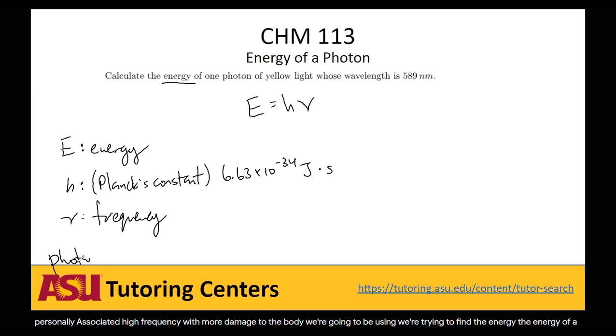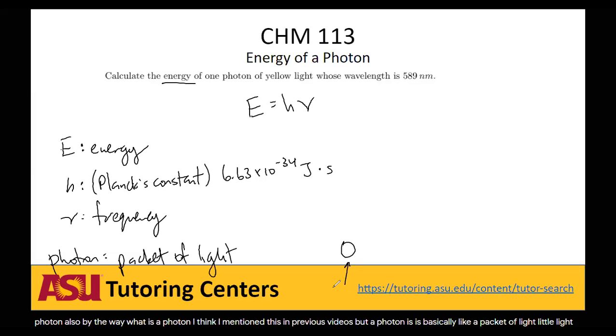I think I mentioned this in previous videos, but a photon is basically like a packet of light. It's a little light packet. Because the big thing with light is it can be viewed as either a particle or a photon, a sort of singular little piece of light.